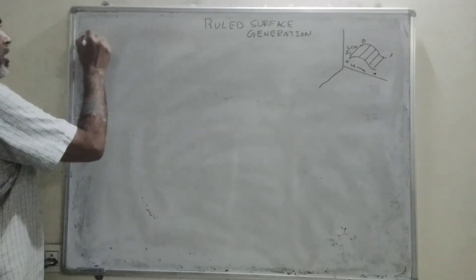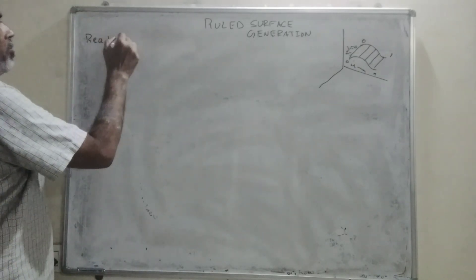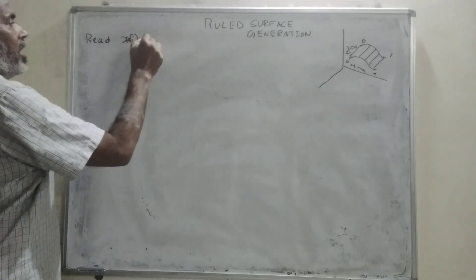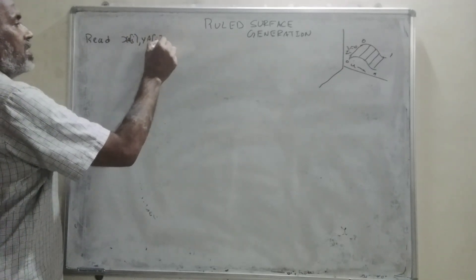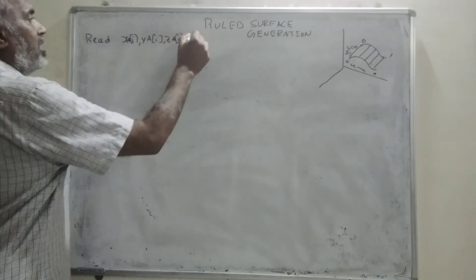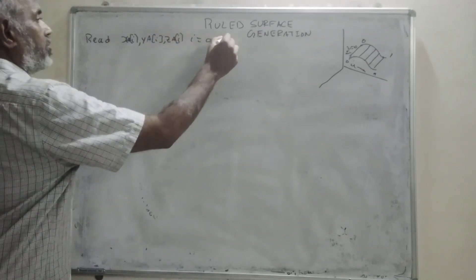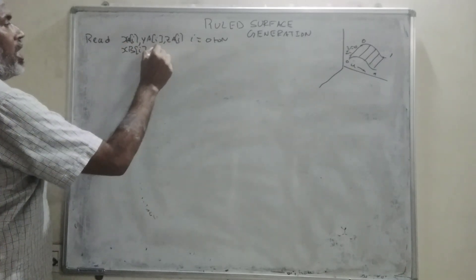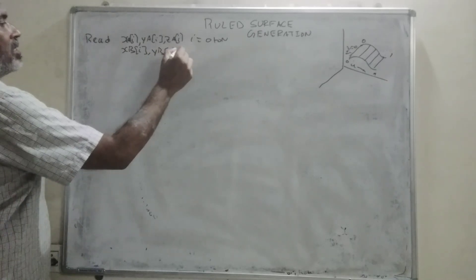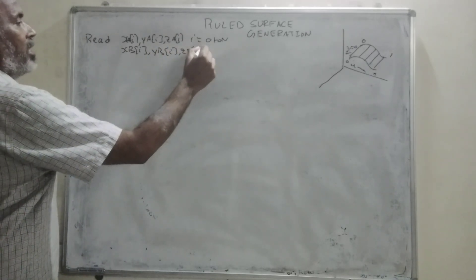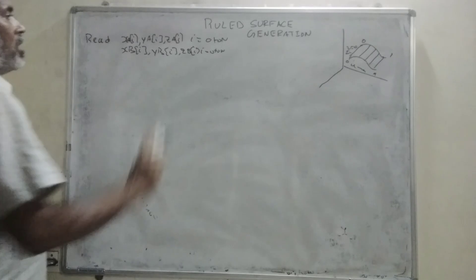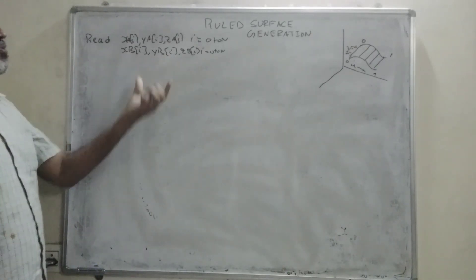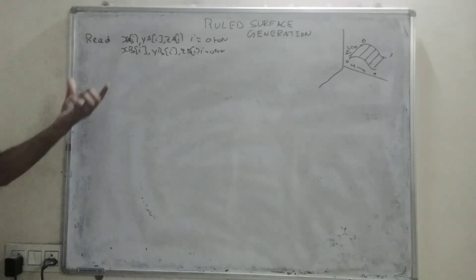First of all, I will bring x_a_i, y_a_i, z_a_i, i equals 0 to n. Similarly, x_b_i, y_b_i, z_b_i, i equals 0 to n. We have taken some several times where I will set up n plus 1 number of control points for two curves.